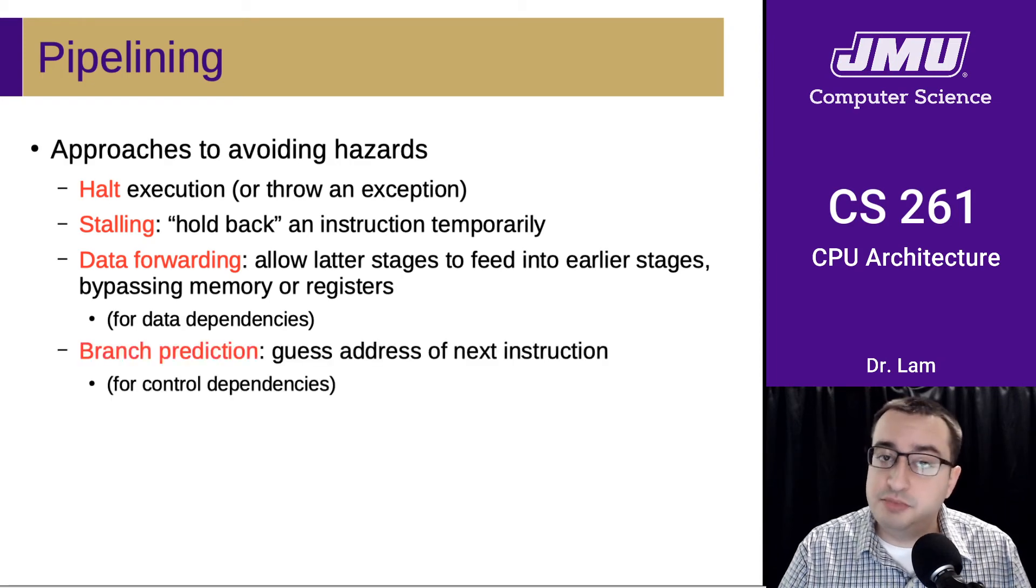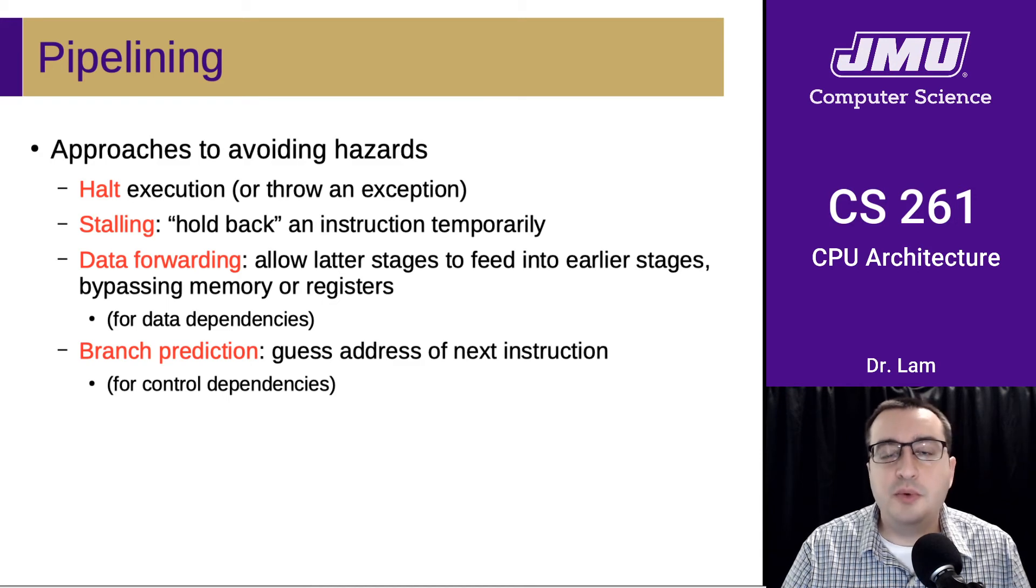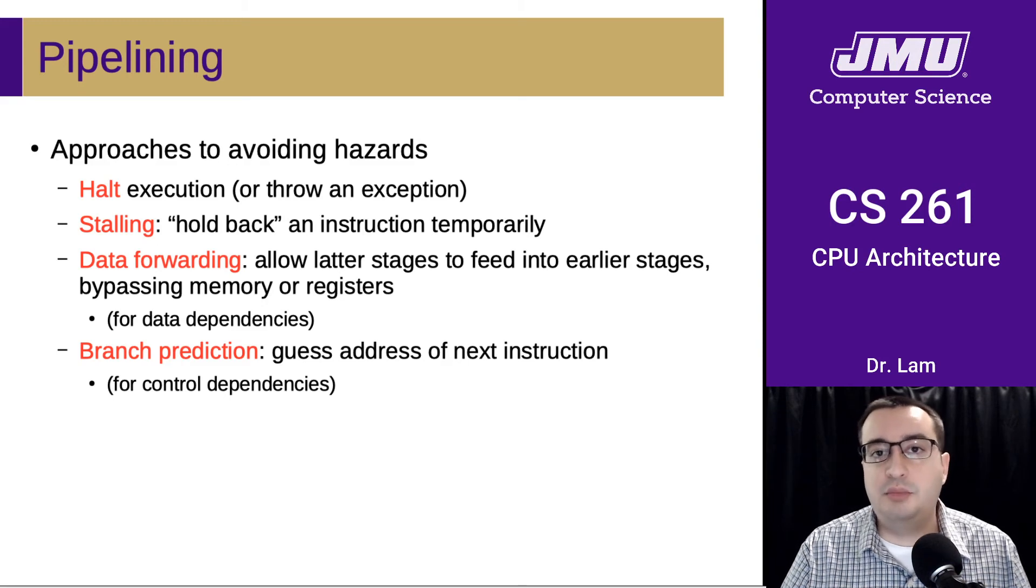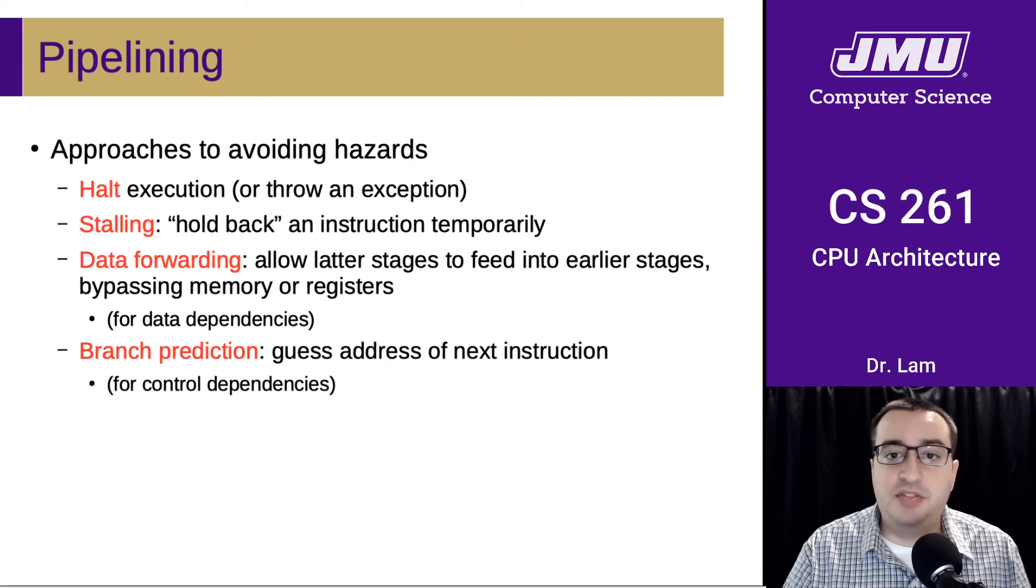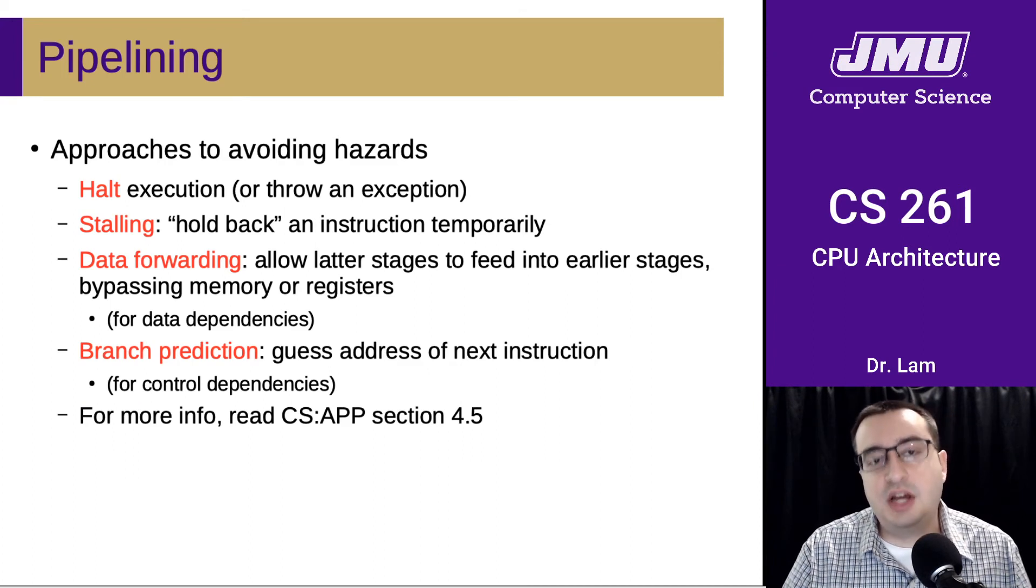There's also branch prediction. This is useful for resolving control dependencies. The idea is that, well, we don't know which direction this particular jump is going to go, but maybe we can make a pretty good guess. Or maybe we'll just guess anyway, and maybe we're wrong and we have to roll back some work. But if we can guess right a significant amount of the time, then we can just go ahead and start executing that instruction and then we'll be ahead once we have verified that that was where we needed to go. We're not going to talk in too much detail about how all these work, but the textbook does cover these a lot more extensively. So if you're interested, I would encourage you to read those sections in the textbook.